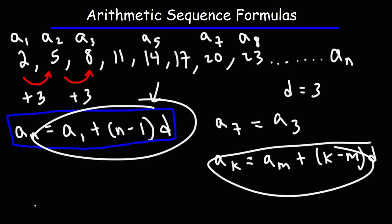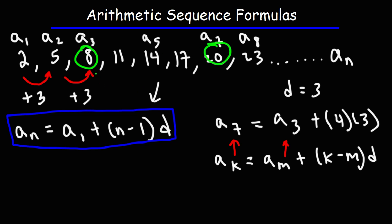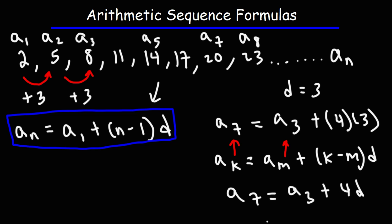This equation is very similar to the previous one. In this example, k is 7 and m is 3, so it's going to be (7 minus 3), which is 4 times the common difference of 3. This makes sense intuitively: to go from the third term to the seventh term, you need to add 4 common differences. So a sub 7 equals a sub 3 plus 4 times d.